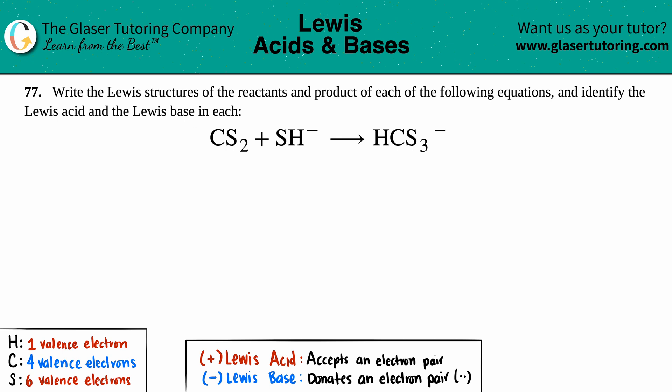Number 77. Write the Lewis structures of the reactants and product of each of the following equations and identify the Lewis acid and the Lewis base in each. Okay, so we first have to write out the Lewis structures.